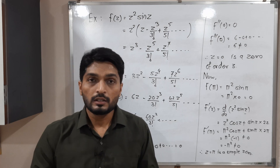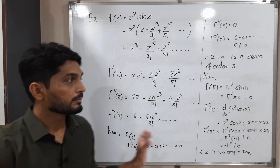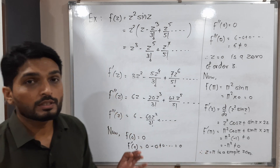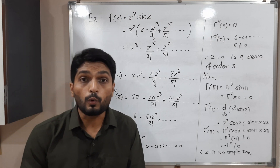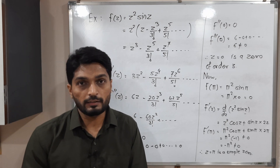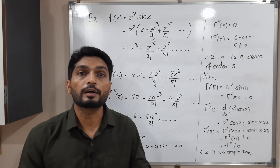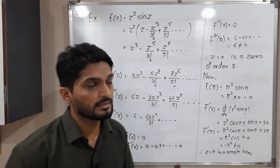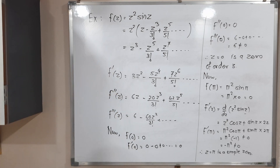In this way we have completed what is a zero of an analytic function and how to find its order. Thank you. See you in the next lecture.